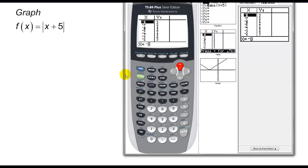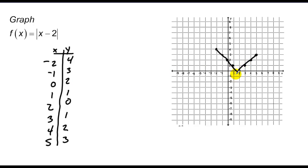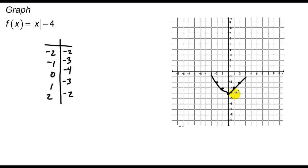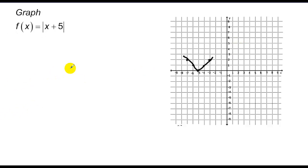Graphing those points from the vertex at -5, 0: over 1 up 1, over 2 up 2, and the same on both sides — there's that V shape. Looking at all my other problems, I see the same pattern: over 1 up 1, over 2 up 2. I've got the same pattern happening every single time — it's just that my graph has been moved.